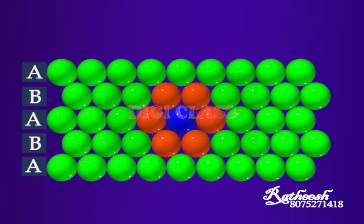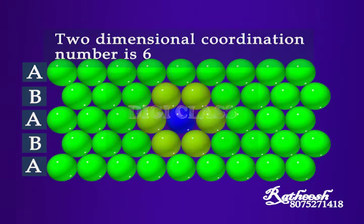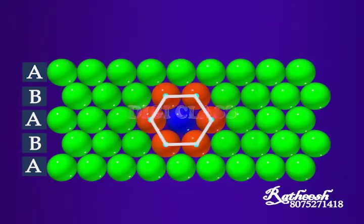Each of the spheres touches six of its neighboring spheres, and so its two-dimensional coordination number is six. The centers of these six spheres form a regular hexagon. Thus, this type of packing is called two-dimensional hexagonal close packing.